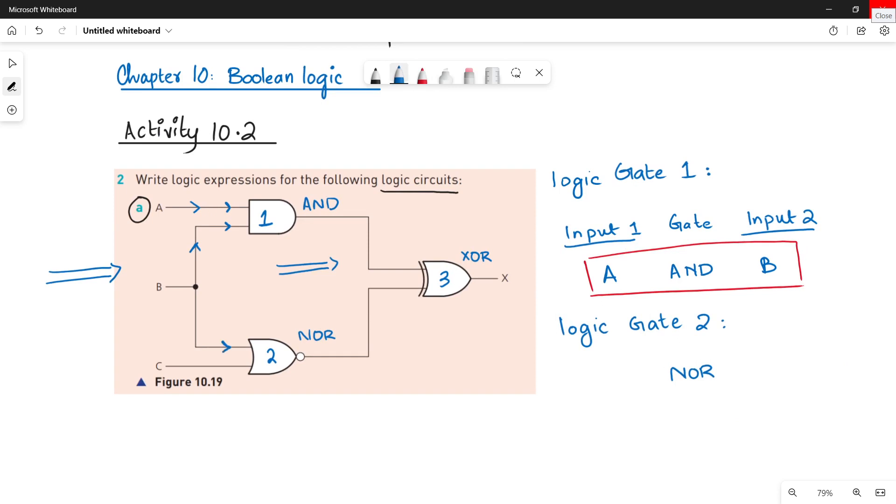One input is B and the second input is C. So write down B here, NOR C. This is going to be the logic expression for your logic gate 2.